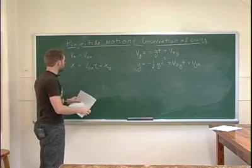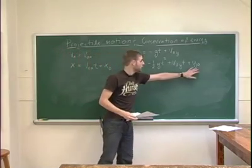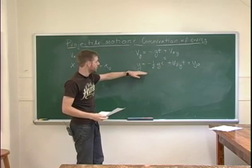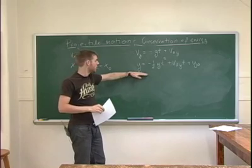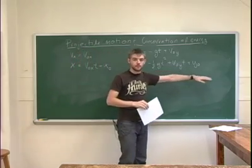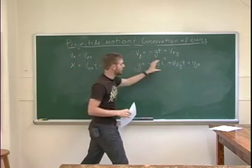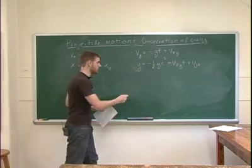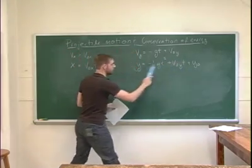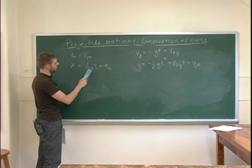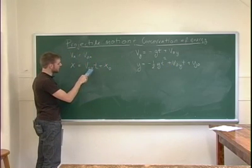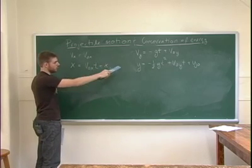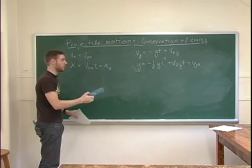If you know your initial height y₀ and initial y-velocity, you can compute the exact y-position at any moment in time. It's remarkable that from just two measured numbers you can predict where a particle will be. Similarly, for the x-direction you need only the initial x-speed and initial x-position to predict the particle's exact position.